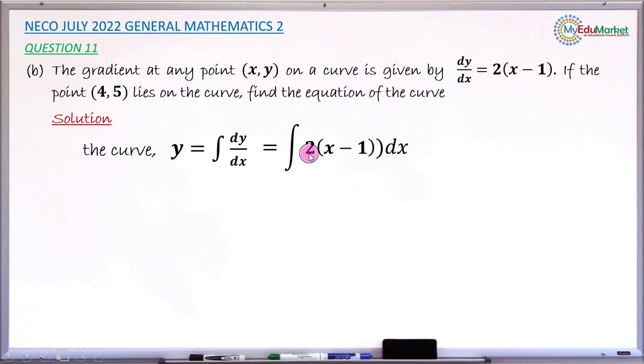It is this that we would like to expand and find the integral term by term. So expanding the bracket, you now have 2 times x, 2 times minus 1. That gives you 2x minus 2. So you have to find the integral term by term.